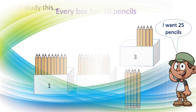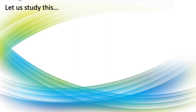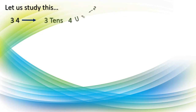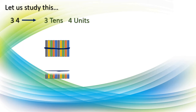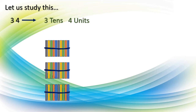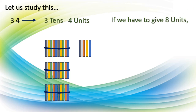Let's look at one more example. This is 34, which means it has 3 tens and 4 units — 30 and 4 is 34, that is 3 tens and 4 units. Here we can see 1st ten, 2nd ten, 3rd ten — meaning 3 tens — and 4 units, which are 4 single sticks. Now if we have to give 8 units to another child, we need 8 single sticks from 34 sticks.